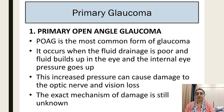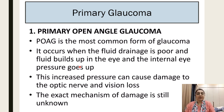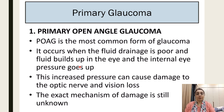First is primary open-angle glaucoma — this is the most common form of glaucoma. It occurs when fluid drainage is poor but fluid formation is normal. This increases the pressure because drainage is poor, and can cause damage to the optic nerve. The exact mechanism is unknown.